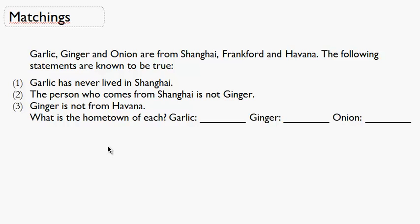Alright, so here is a classic logic problem, which is matchings. We have ginger, garlic, and onion, who are from Shanghai, Frankfurt, and Havana, but not necessarily in that order. And we know that the following statements are true: one, garlic has never lived in Shanghai; the person who comes from Shanghai is not ginger; and ginger is not from Havana. So which is the hometown of each?